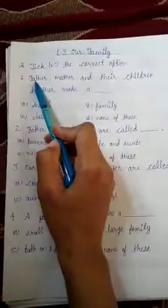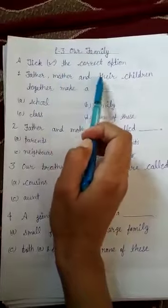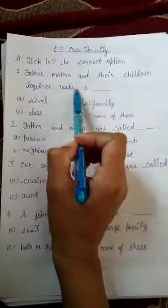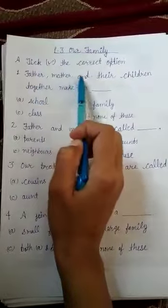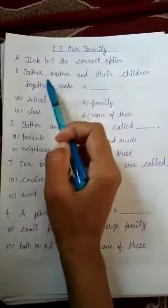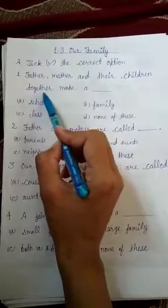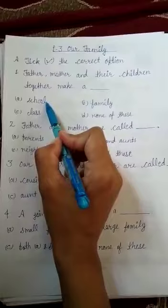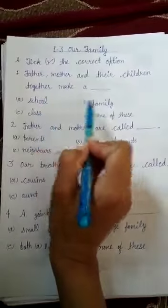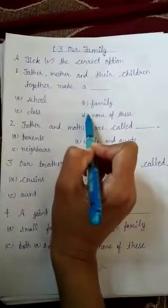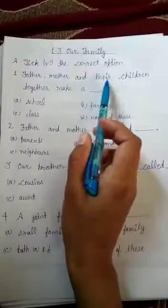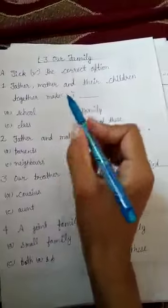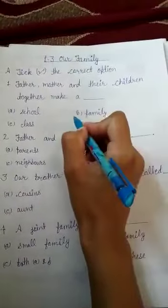Father, mother and their children together make A. Papa, mommy and their children together make A. School, class, family, none of these. Father, mother and their children together make a family. Family.